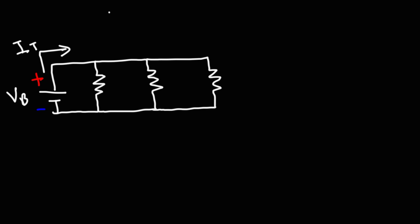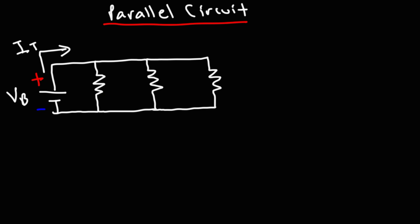Now let's move on to a parallel circuit with three resistors connected in parallel. VB is the voltage of the battery and IT is the total current. In a series circuit there was just one path for current to flow; in a parallel circuit there are multiple paths. The resistors are R1, R2, and R3, with currents I1, I2, and I3 respectively.